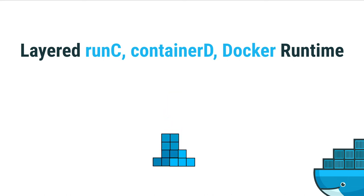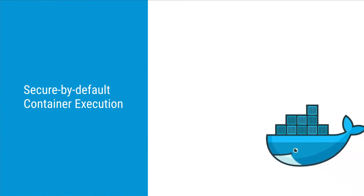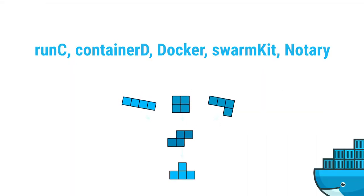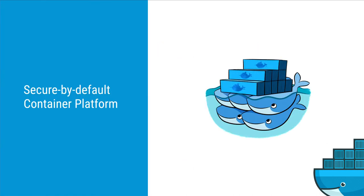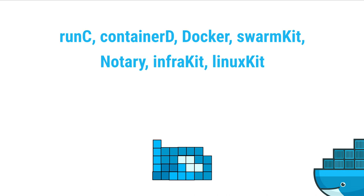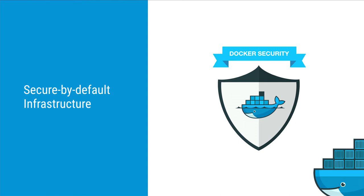Now you can see how we stack all these tetrominoes together. We start with InfraKit and layer in RunC, ContainerD, and the Docker runtime to provide a secure-by-default container execution environment. Add Notary and SwarmKit and you get a secure-by-default container platform with clustering. Add LinuxKit, Notary, and InfraKit together and we're truly going immutable from the ground up — a secure-by-default infrastructure.